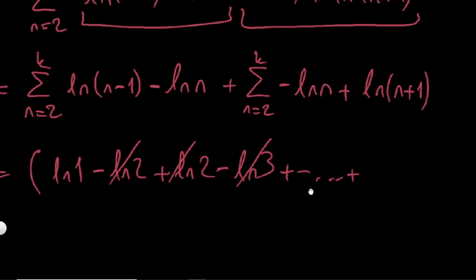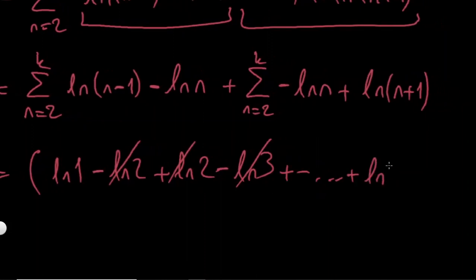Up to, if I put k, ln k minus 1 and minus ln k. And this thing will also go. Everything inside will go except for the first and last term. This was my first sum.